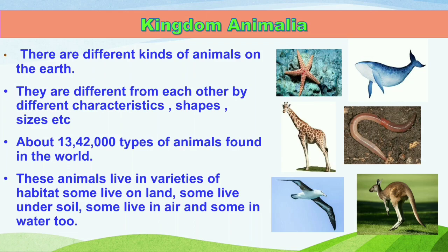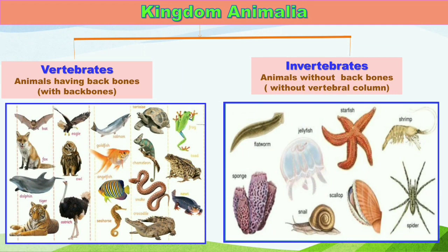On the basis of their backbone, these animals can be broadly divided into two groups: vertebrates and invertebrates. Vertebrates are those animals which have backbones or vertebral columns in their body, whereas invertebrates are the animals which do not have backbones or vertebral columns.